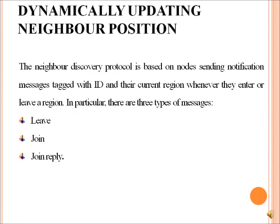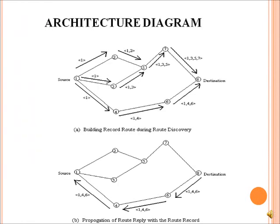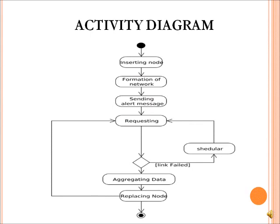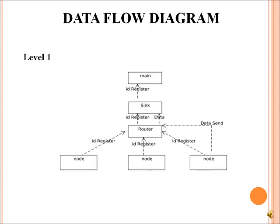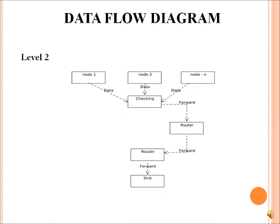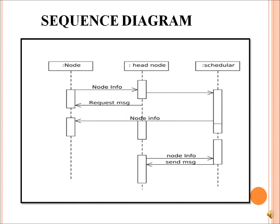Dynamically updating neighbor position covers Leave and Join architecture. This is the architectural diagram of building a record group during group discovery. This is the activity diagram of the project. Also shown are Data Flow Diagram Level 0, Data Flow Diagram Level 1, Data Flow Diagram Level 2, and the Sequence Diagram.